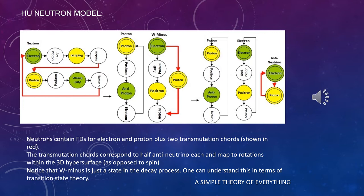Neutrons contain fundamental dilators for electron and proton plus two transmutation cords, shown in red. The transmutation cords correspond to half anti-neutrino each and map to rotations within the 3D hypersurface, as opposed to spin, which happens in 4D. Notice that W- is just a state in the decay process. One can understand this in terms of transition state theory. Notice that neutron is a dimer. This is because there is uncertainty on which is the initial phase, the electron or the proton.